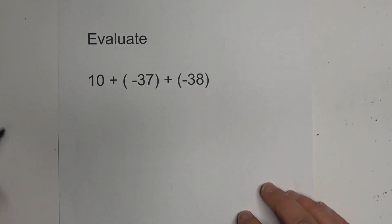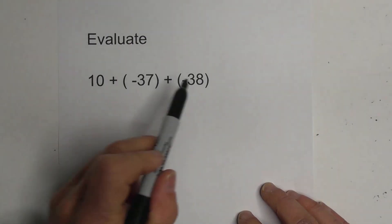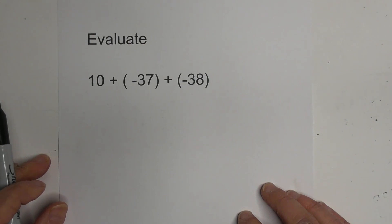How do we evaluate this problem? Well, let's get started. We're going to work from left to right and we're going to need to use some of the signs for adding and subtracting positive and negative numbers.